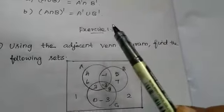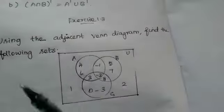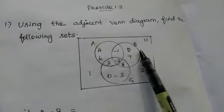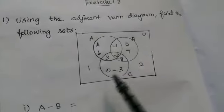Now we are doing Exercise 1.3. First is using the adjacent Venn diagram, find the following sets. Here three sets are there: A, B, C, and the union set.